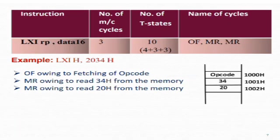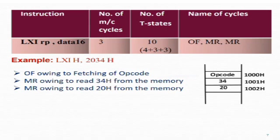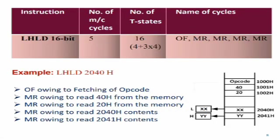Next instruction is LXI register pair, 16-bit data — for example, LXI H, 2034H. This instruction will copy the contents 2034H into the HL register pair. The number of machine cycles required are: first is opcode fetch owing to fetching of opcode; second is memory read owing to reading of 34H, that is the lower byte, from the memory; and third is memory read again to read 20H from the memory. Remember, there is no memory write because the HL register pair is part of the microprocessor, not part of the memory.